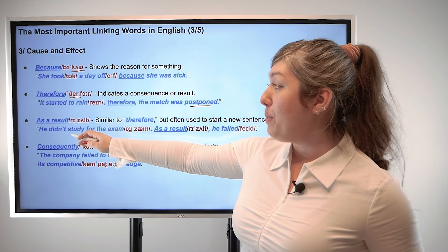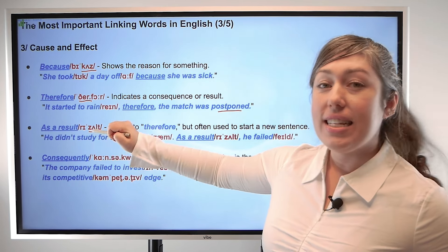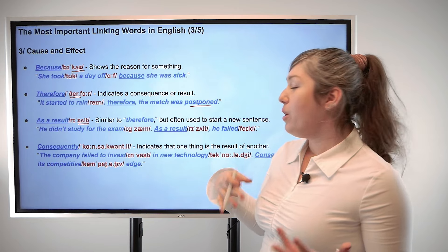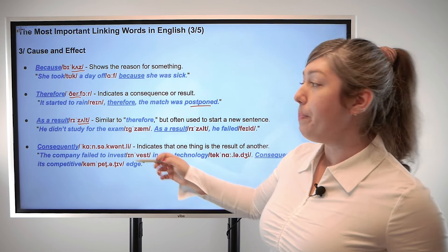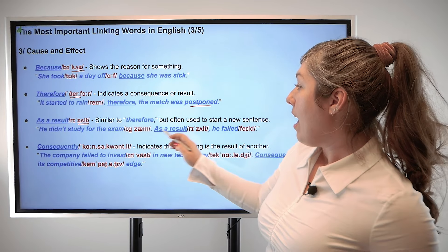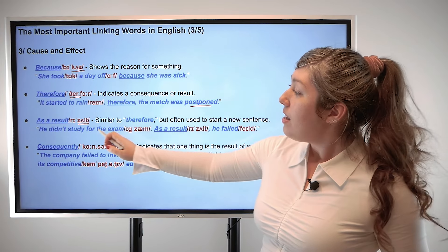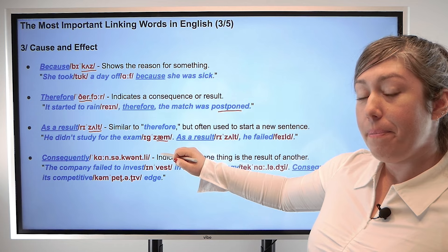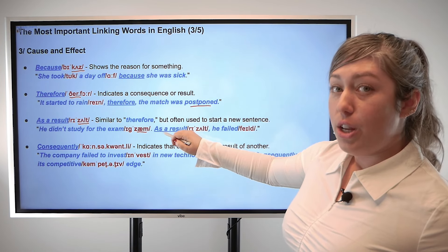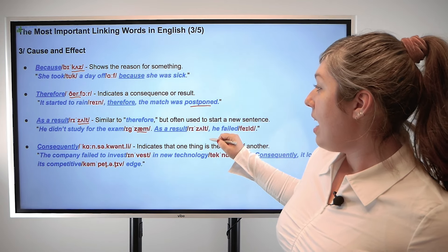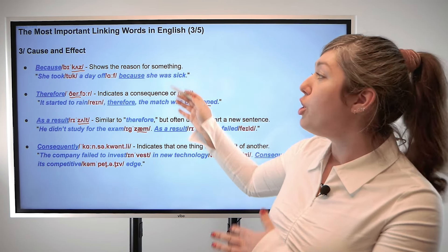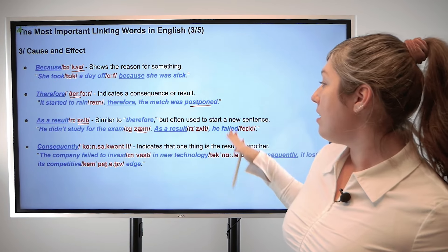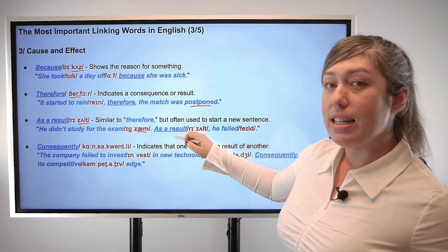And we have 'as a result,' with emphasis on the second syllable — result. It's similar to therefore, but we usually use it to start a new sentence. For example, he didn't study for the exam. As a result, he failed. So we're starting a new sentence with 'as a result' to show the consequence, just like therefore.